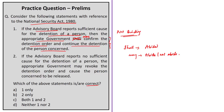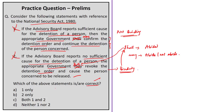Statement two says that if the advisory board reports no sufficient cause for detention, the appropriate government may revoke the detention order. This is also wrong — when the advisory board reports no sufficient cause, it is binding on the government to revoke the detention order and ensure the person is released. So it is 'shall revoke,' not 'may revoke.' Both statements are wrong, making the correct answer option D — neither one nor two.